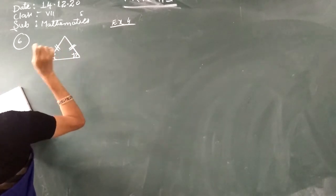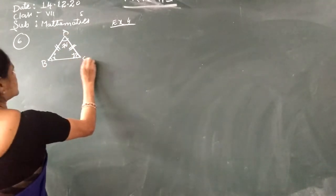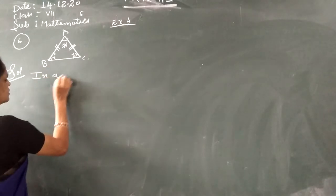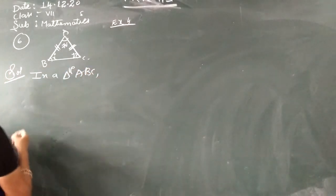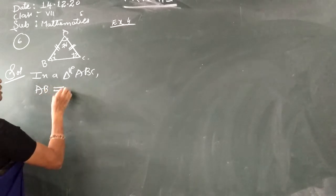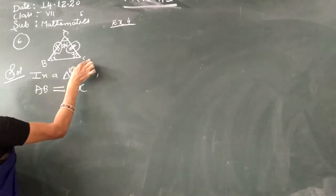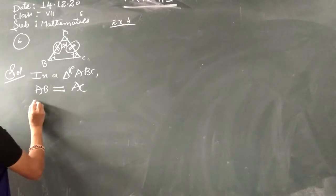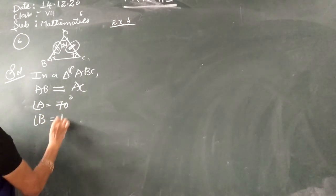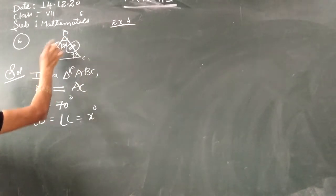Here they give a symbol, and we will name this triangle as A, B, C. For the solution, by seeing the picture, what we understand is that in triangle ABC, AB is equal to AC — by seeing this symbol we can identify AB is equal to AC. Now angle A is equal to 70 degrees.